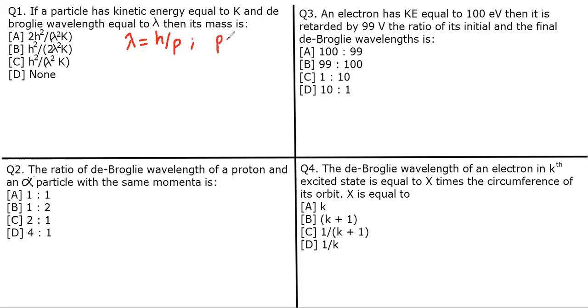You know that momentum equals √(2mK), where m is mass and K is kinetic energy. So let's use this. First, we get the momentum from λ = h/p, giving us p = h/λ. Taking the square of this equation...